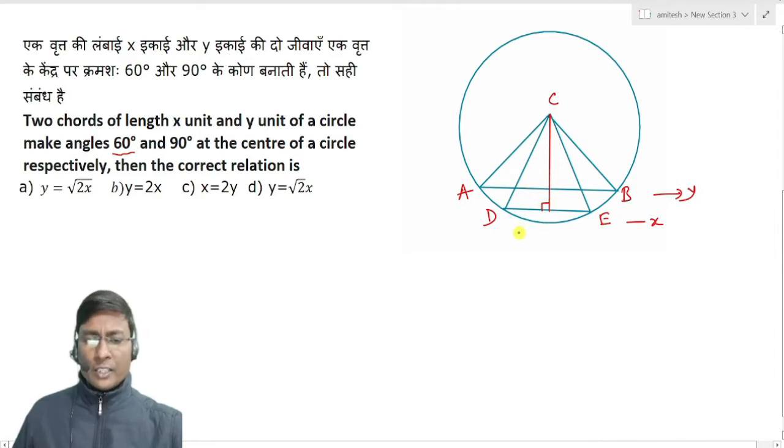So this point is F and this point is G. In this case, DF value will be simply x by 2, and GB value will be y by 2.